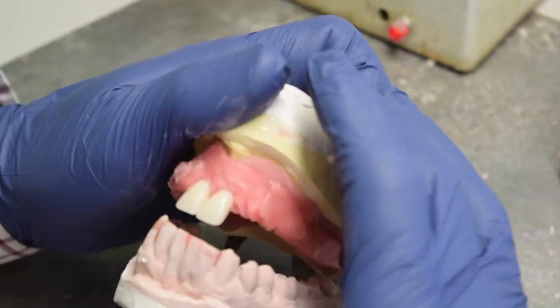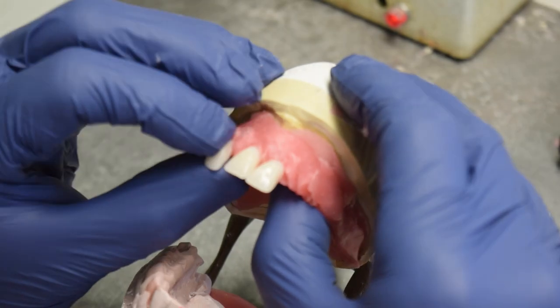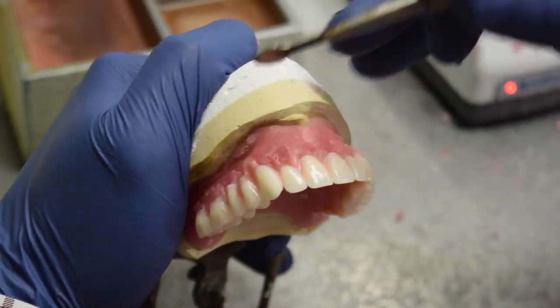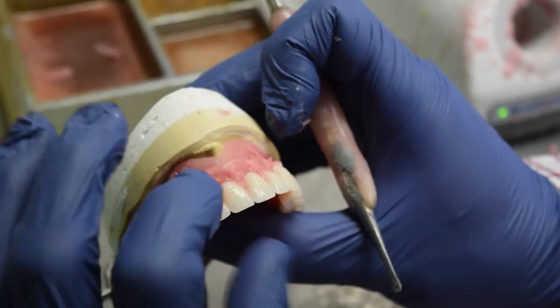Our lab techs rely on decades of experience to ensure the shape and thickness of the denture is made for optimal performance. Once the teeth are added, the denture is handed over so the waxed base can be shaped and molded to better resemble your natural mouth.